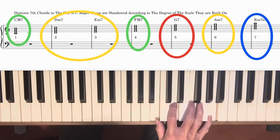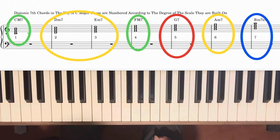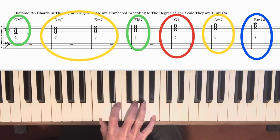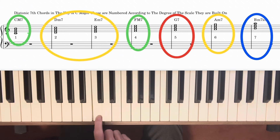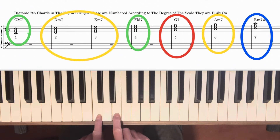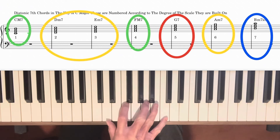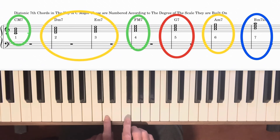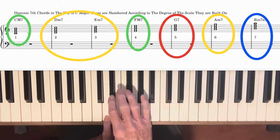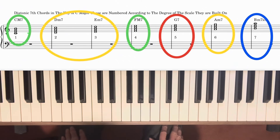What makes these chord types different from each other is the distance between the notes in the chord, which we call intervals. For instance, looking at a C major 7 chord, the distance between the root note C and the third E is 4 semitones. Looking at a D minor 7 chord, the distance between the root and the third is just 3 semitones. At this point you don't really need to concern yourself too much with intervals — I explain them more in the video about diatonic seventh chords.